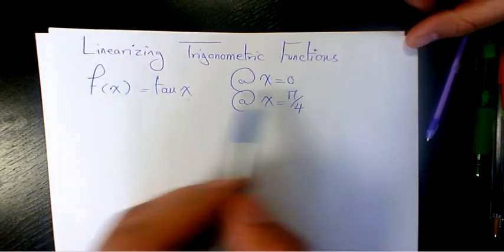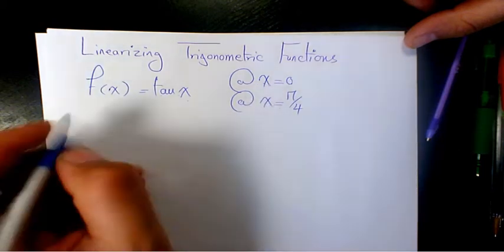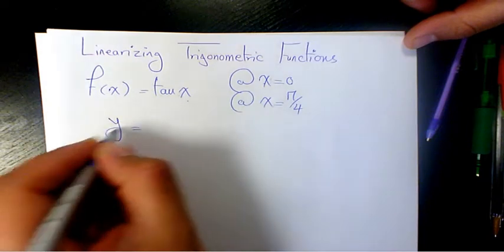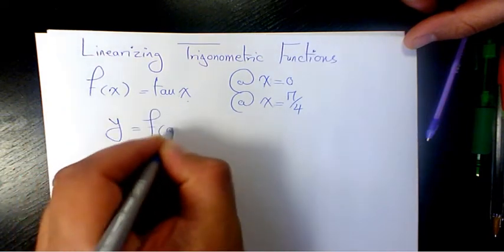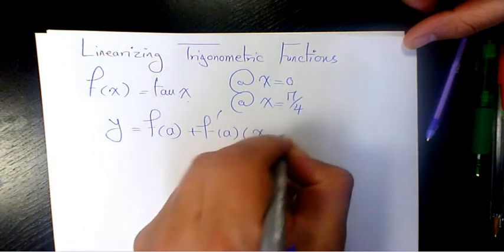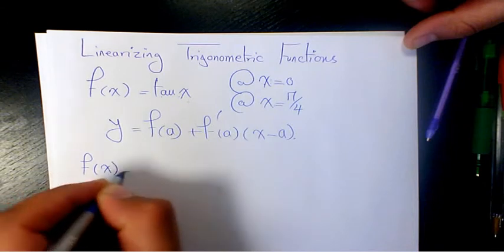The general formula for linearizing a function is y equals f of a plus f prime of a times x minus a. So f of x is tan x.